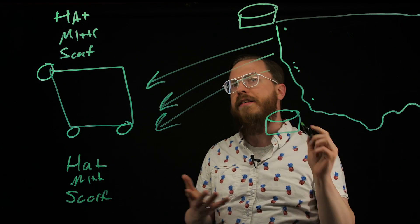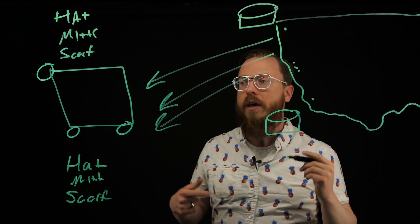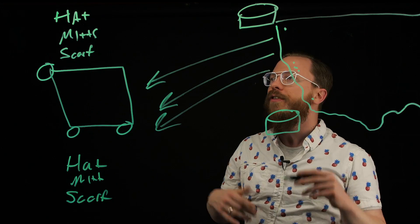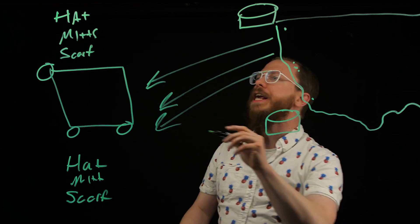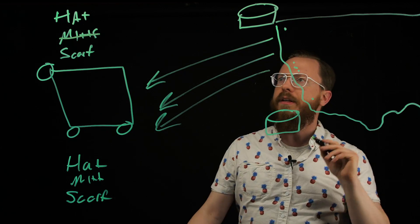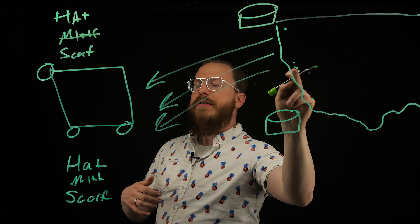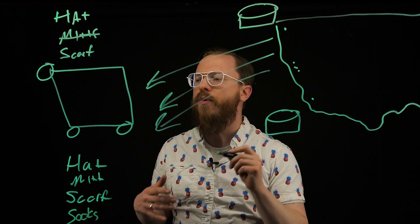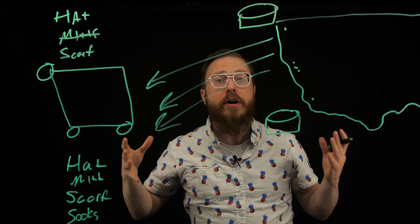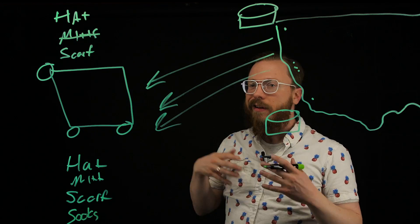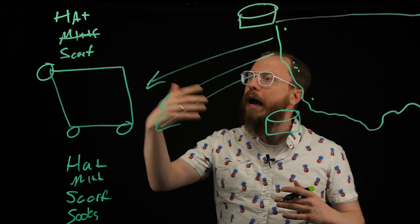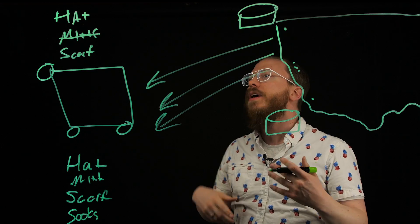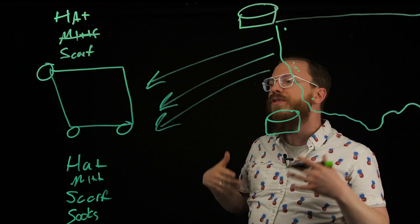This is fine until things start happening where you're going back and forth between different servers. In this case you run into a problem where these things get very different. So you're up here on this server and you remove the mitts. And then down here you add something like socks. Now you have two very different versions of the shopping cart. There's no way to reason about how these might be different without having to replicate, and when you replicate directly you're losing that geolocal latency.